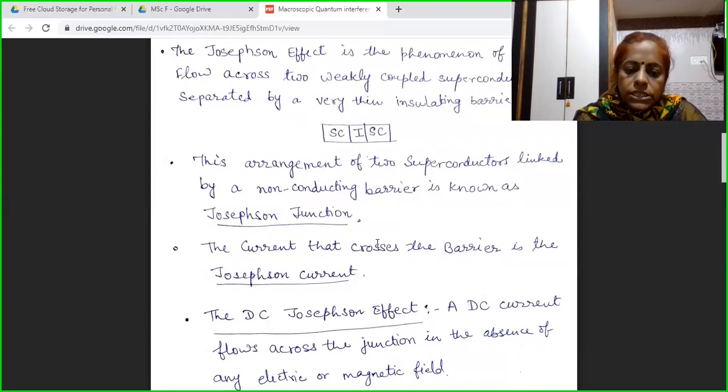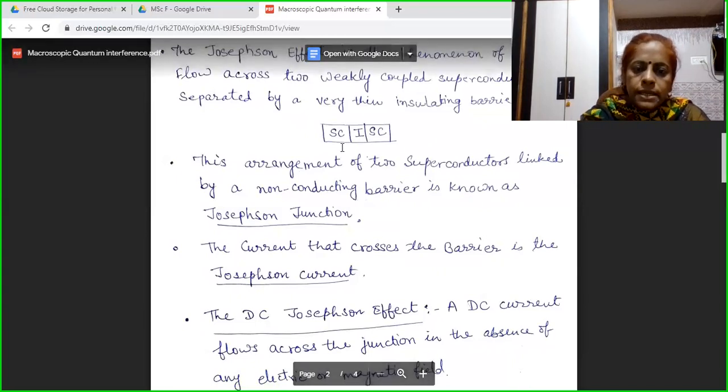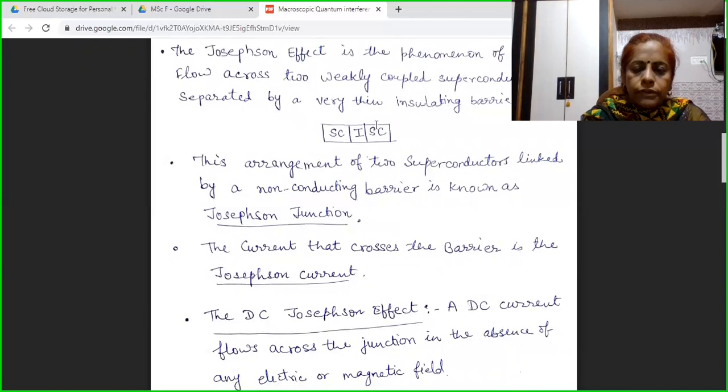According to DC Josephson effect, if we have this arrangement, that is two superconductors separated by a thin insulating layer and there is no electric or magnetic field applied, then in this case, we have in output a current which is DC in nature. That means in spite of any current or voltage source, there is the output current and that is DC.